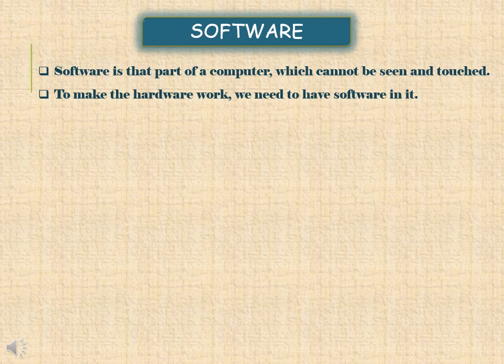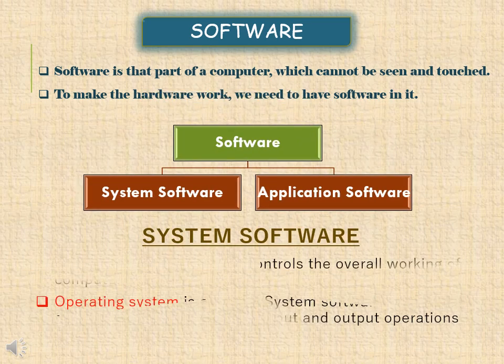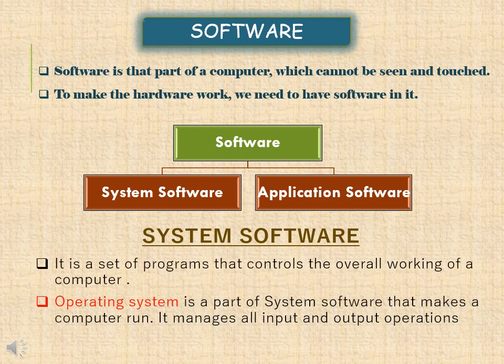The two types of software are system software and application software. System software is a set of programs that controls the overall working of a computer. Operating system is a part of system software that makes the computer run. It manages all the input and output devices and controls their working. Without an operating system, a computer is unable to work.